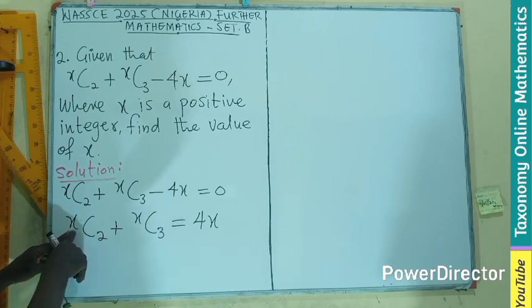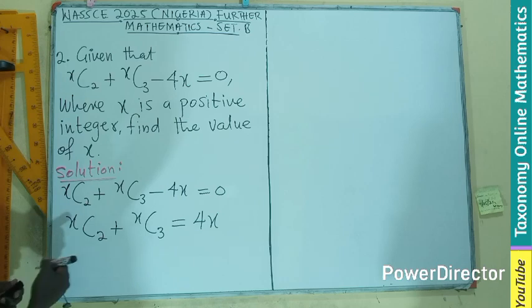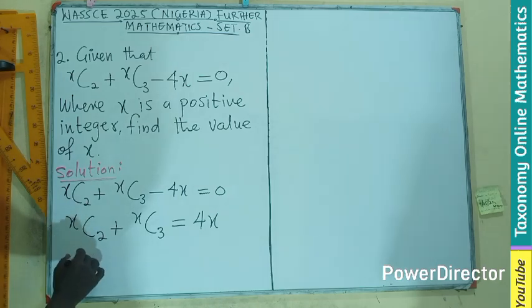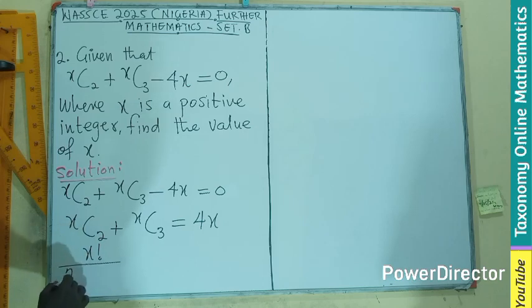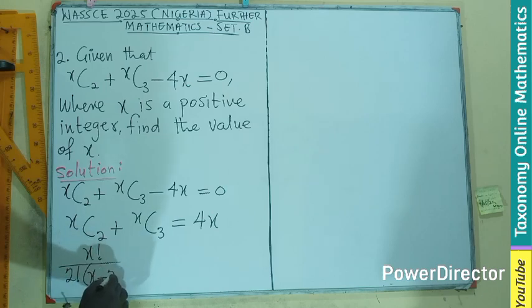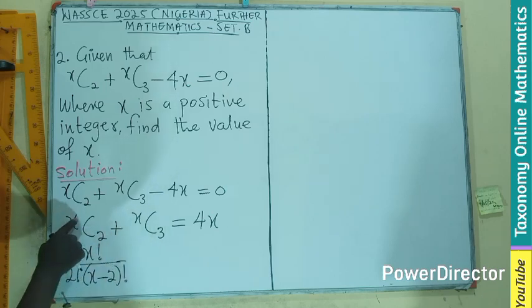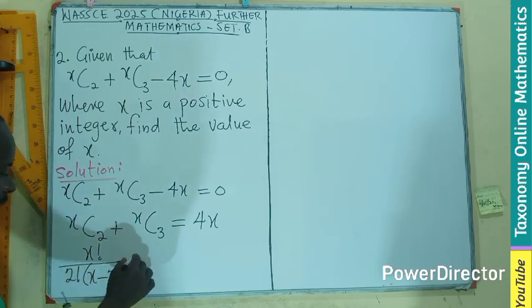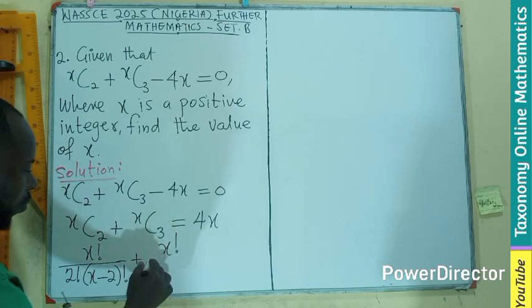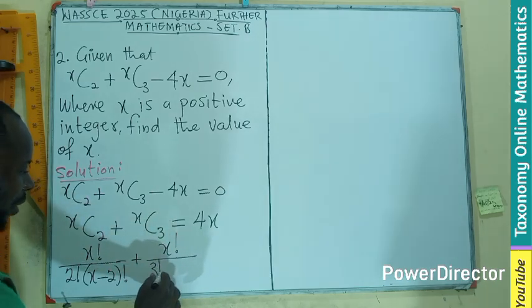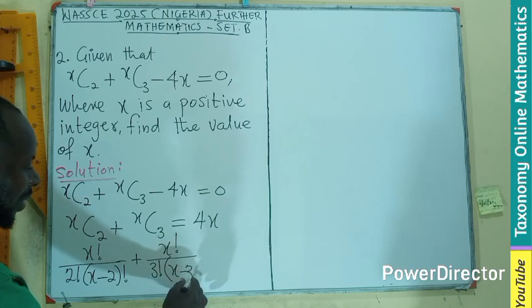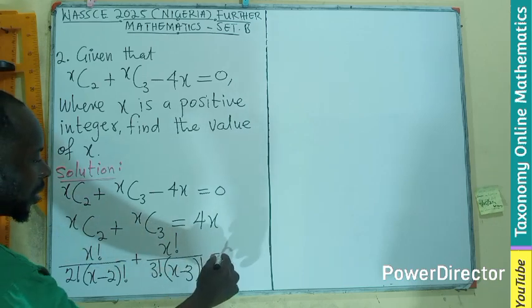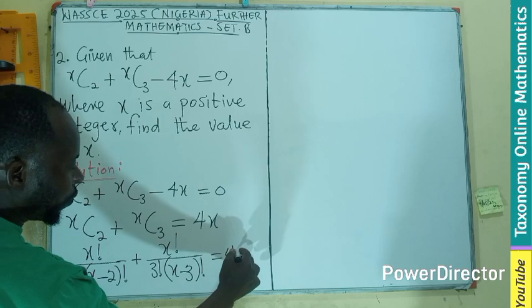Remember, it's going to be the factorial of the term here. x factorial divided by the r here, which is the 2 factorial into bracket, your x minus 2, or factorial. This is your r term, the n C r. This is how it is being expanded.